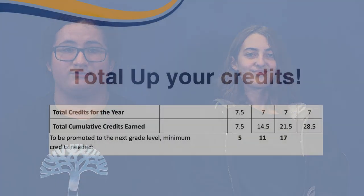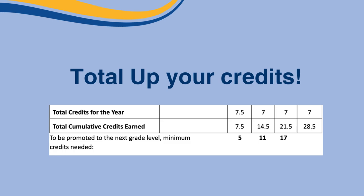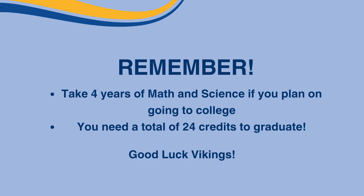Congratulations! You've made it to the end of the list, but before you're done, you still need to total the credits you earn for all grades. Freshmen, put in the total credits you plan to earn once your freshman year is over. Consistently check on your grades and make sure you're on track to have your total amount of credits needed for graduation. Remember, it's a minimum of 24 credits. Thank you so much for listening, and remember, if you have any questions, please contact your counselor.